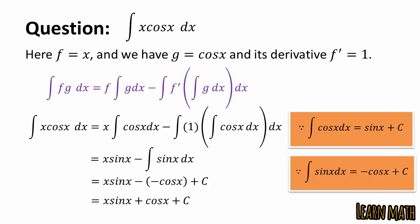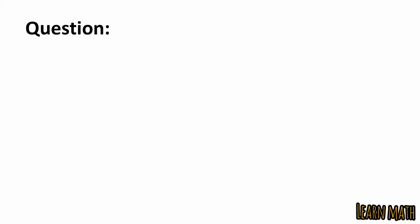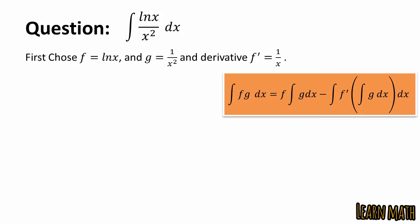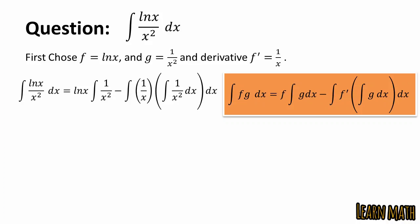The next question is the integral of log x divided by x squared dx. Choose f equal to log x and g equal to 1 over x squared, and the derivative of f is 1 over x. By using integration by parts, replace the values of f, g, and f prime in the formula: integral of log x over x squared dx equals log x times the integral of 1 over x squared, minus the whole integral of 1 over x times the integral of 1 over x squared dx.